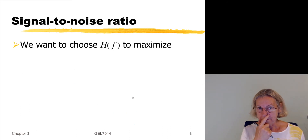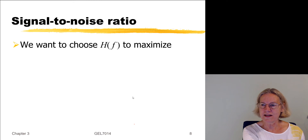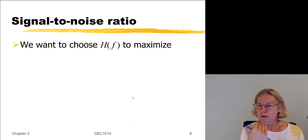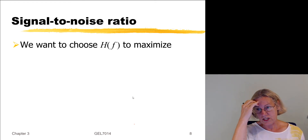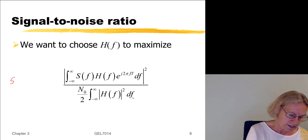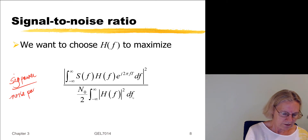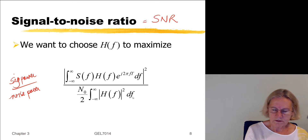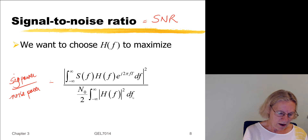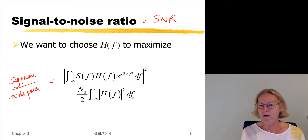Now we can form a signal-to-noise ratio, because H appears in both the expression for the instantaneous power of the signal and for the average noise power. H affects them both, and what we'd like to do is diminish the noise and increase the signal. The signal-to-noise ratio is signal power over noise power, and we put into this ratio the two frequency domain integrals used to calculate the respective powers.